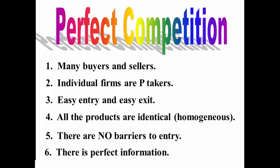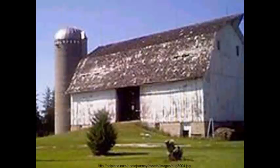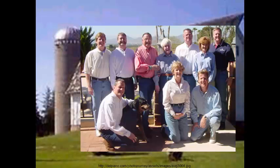There is perfect information, meaning information is distributed freely throughout this entire market, so sellers are pretty well informed and buyers are well informed. One of the best examples used for perfect competition is the farming industry.